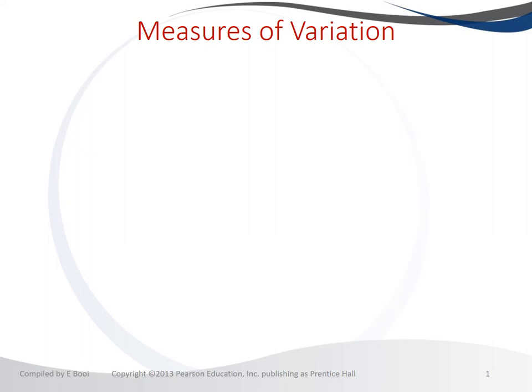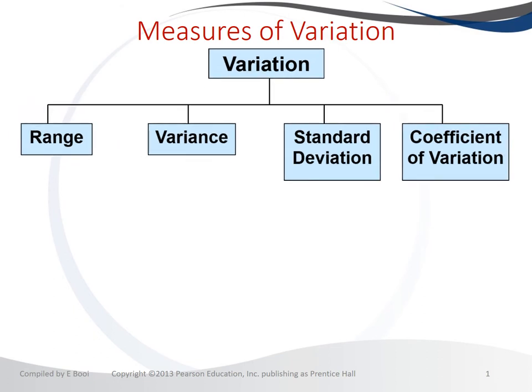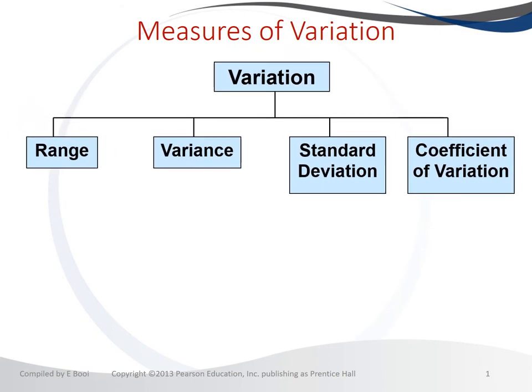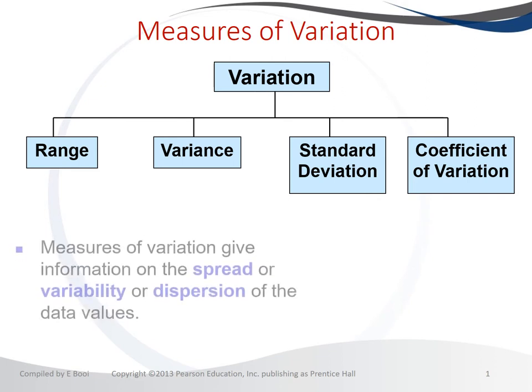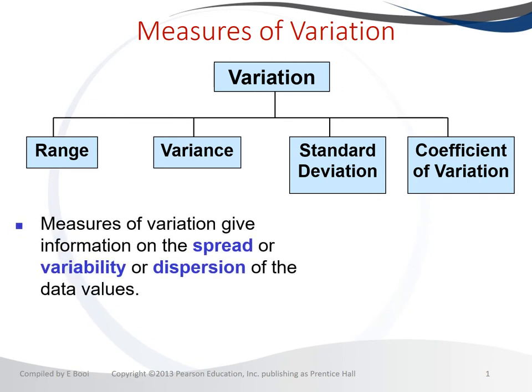There are four measures of variation. For now, we're going to concentrate only on the range, the variance, and the standard deviation. They measure how your data is spread around the mean, or what is the spread of your data around the mean.